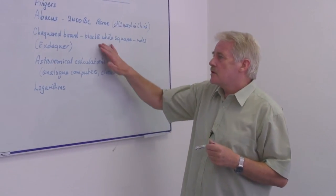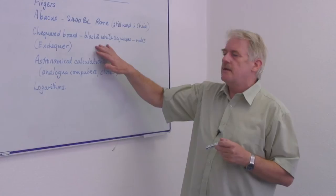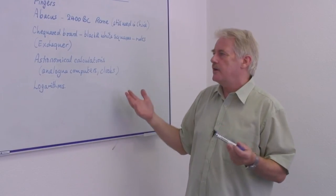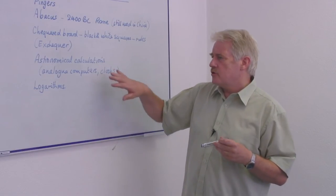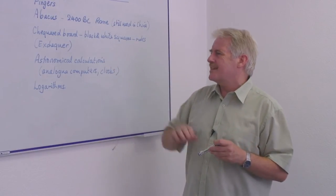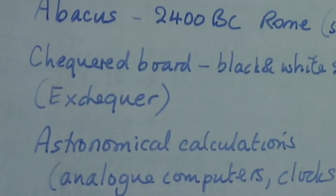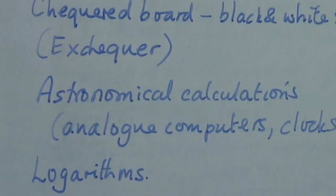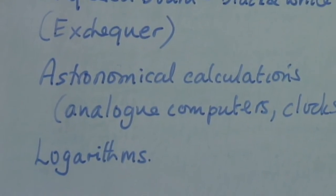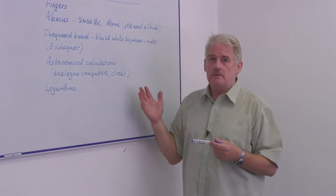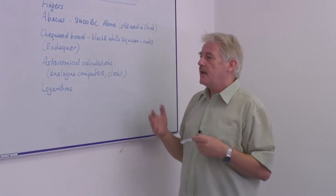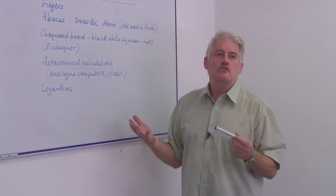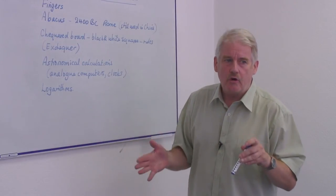So that was a device which was designed for a particular purpose. The abacus was a fundamental device which could be used for anything. Also other devices used for specific things were things like astronomical calculators. And eventually, of course, clocks. These too are only calculators. They simply are a mechanical device for giving you a number, and that number tells you something about the quantities you're interested in.